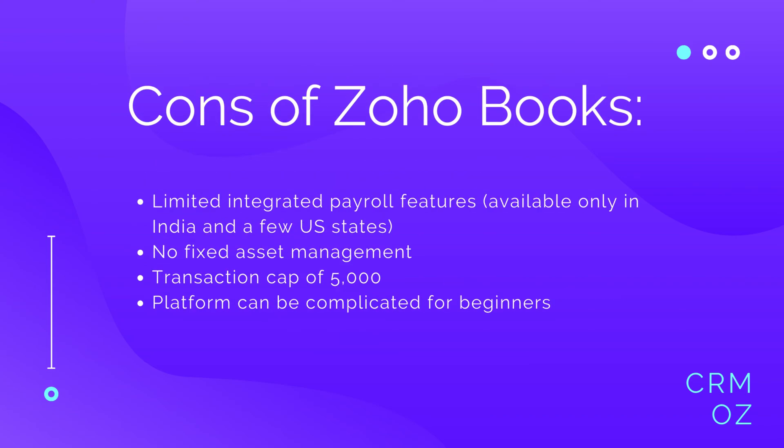The cons of Zoho Books: the main disadvantage is limited integrated payroll, available only in India and a few US states. There is no fixed asset management, a transaction cap of 5,000, and the platform can be complicated for beginners to learn.